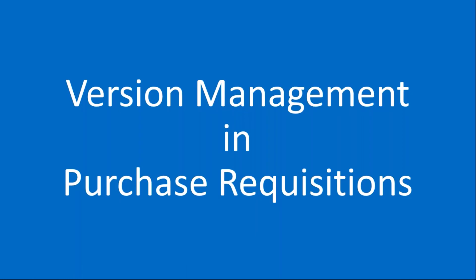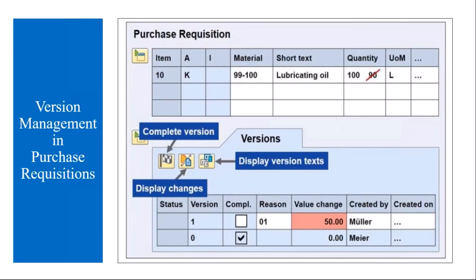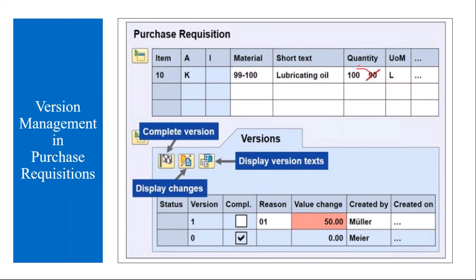Now let's look at how version management is activated in purchase requisitions and how it works. Once you activate version management for purchase requisitions, the moment you make any changes — for example, you revise the quantity from 90 to 100 — a new version is created. When you first create the purchase requisition, the initial version is zero. The moment you make some changes, the version becomes one. You can see all those versions using the available buttons, which I will show in the system.